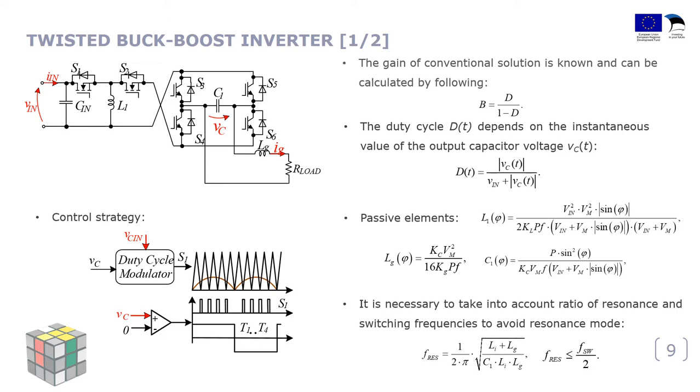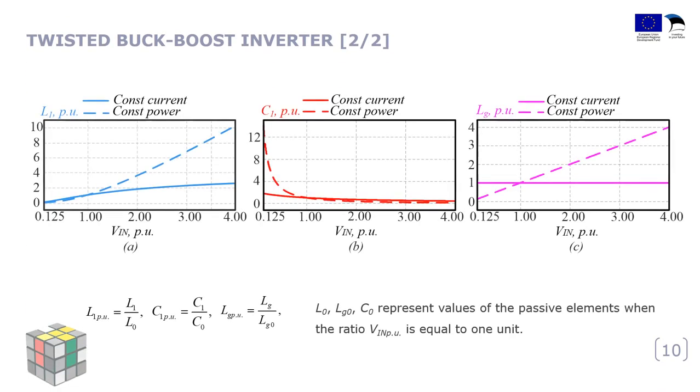The next slide shows the component dependencies on the boost and buck radius. In other words, these graphs show when the ripples of the passive components are greatest. For example, the ripples of the inductances are increasing with the greater input voltage, while the capacitor is decreasing.